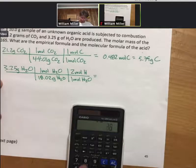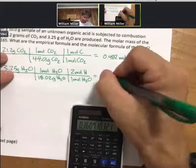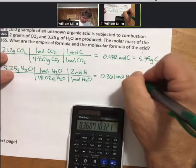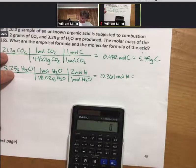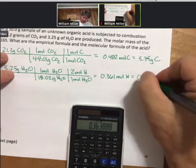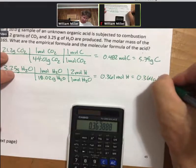3.25 divided by 18.02 times 2. So, 0.361 moles of hydrogen.